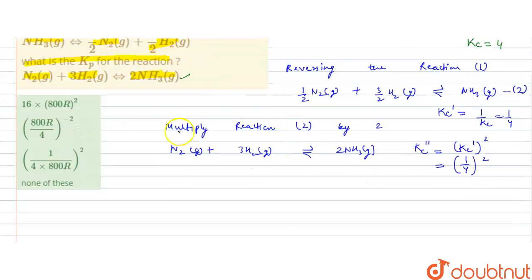So Kp is calculated by the relation, Kp is equal to Kc RT power delta NG. Where delta NG is number of moles of gaseous moles of products minus the gaseous moles of the reactants.